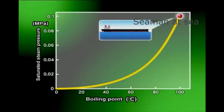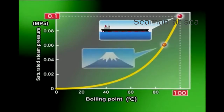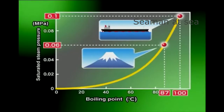Water boils at 100 degrees Celsius under one atmosphere or 0.1 megapascals. But on top of Mount Fuji, the atmospheric pressure drops to 0.06 megapascals, causing water to boil at 87 degrees Celsius. The critical pressure at which a liquid begins to boil under a certain temperature is called saturation vapor pressure for that temperature. The lower the saturation vapor pressure, the lower the boiling point. In other words, vapor bubbles and cavitation occur where water pressure is low.